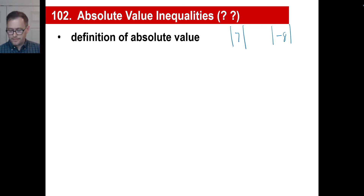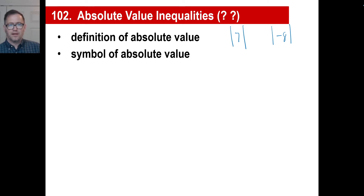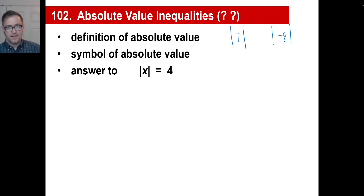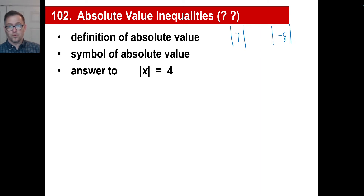That's the definition of absolute value. The symbol, of course, we just saw that right there. So this is interesting: the absolute value of some number is four. What's x? The absolute value of four is four. But you could also put negative four, right? So those are both answers. When they ask you to put the answer, you have to put both of those because both of those will work.